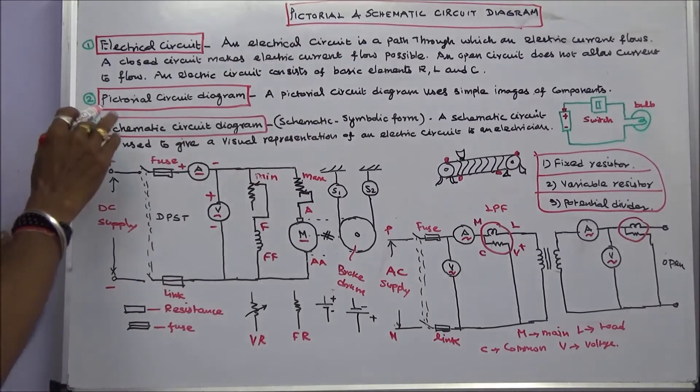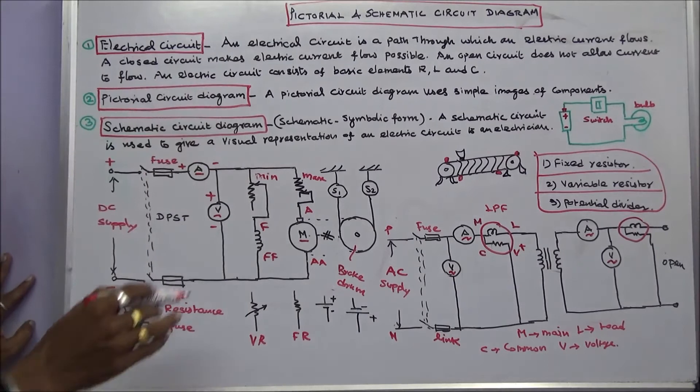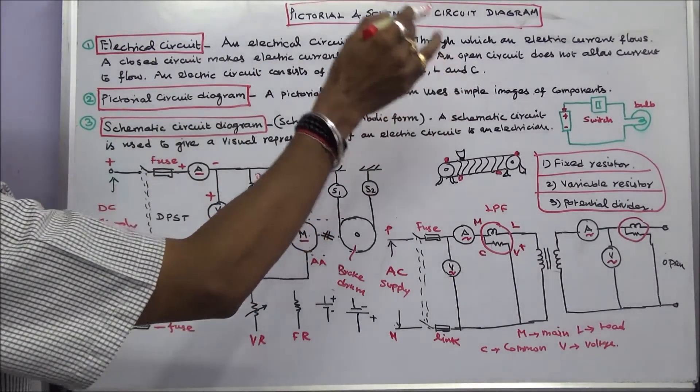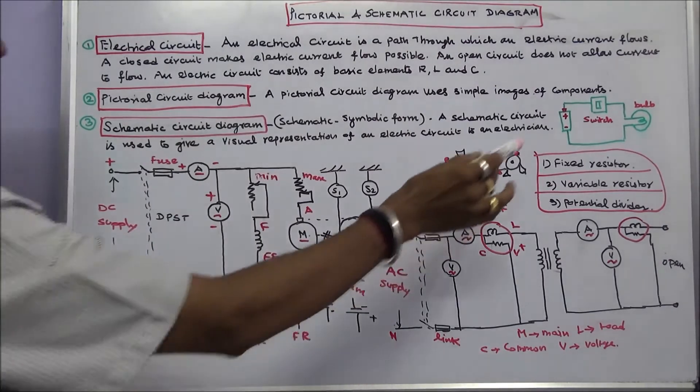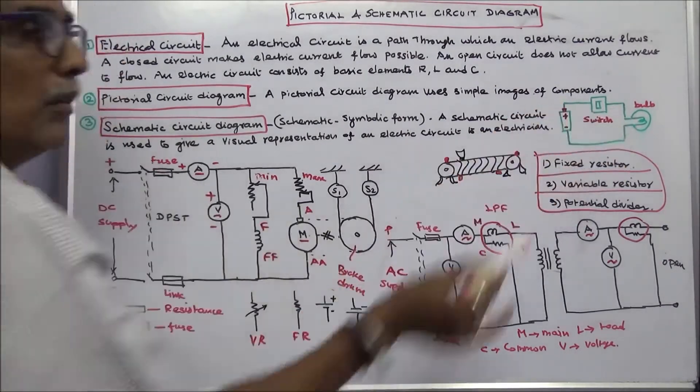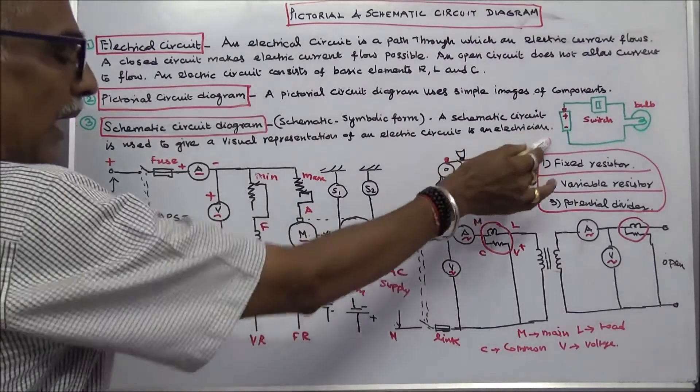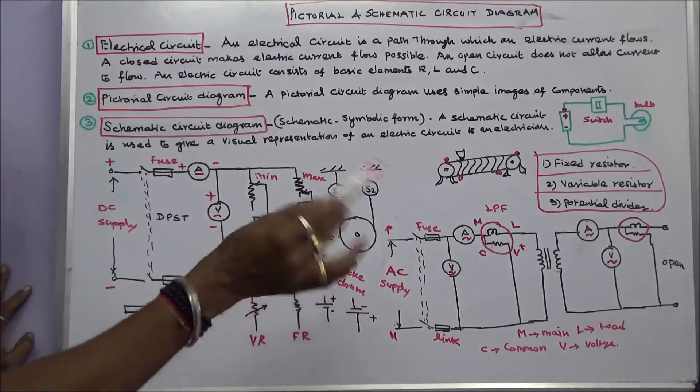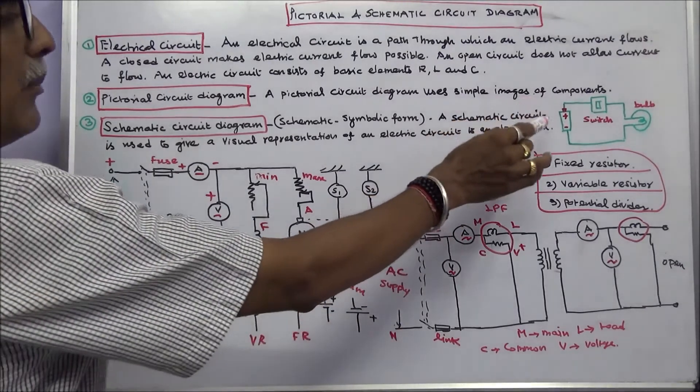The second term is pictorial circuit diagram. A pictorial circuit diagram uses simple images of components. Here this is a battery, this is a piano switch, this is a bulb. The symbol of battery is this plus minus, this is minus plus. I am not using any symbols, only the images of components.